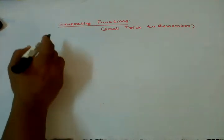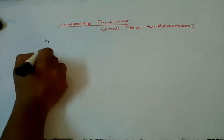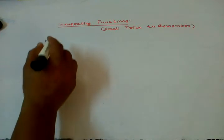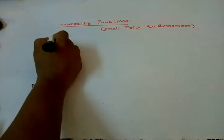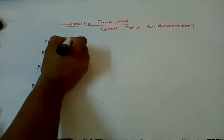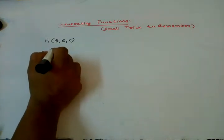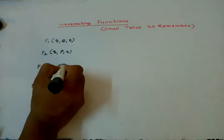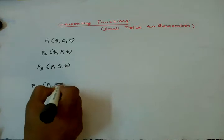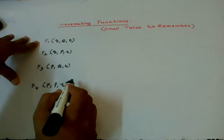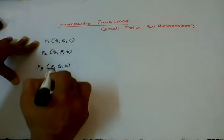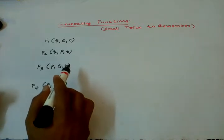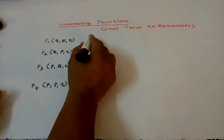We have four generating functions: F1, F2, F3, F4. The four generating functions are defined in terms of their arguments: small q, capital Q, t; then small q, capital P, t; then small p, capital Q, t; and the fourth function small p, capital P, t.